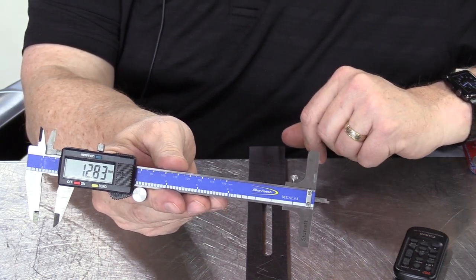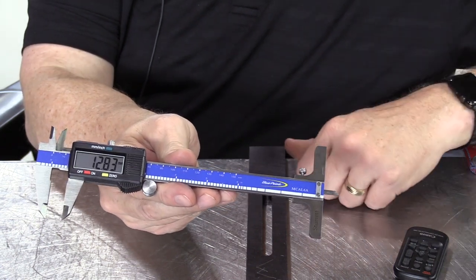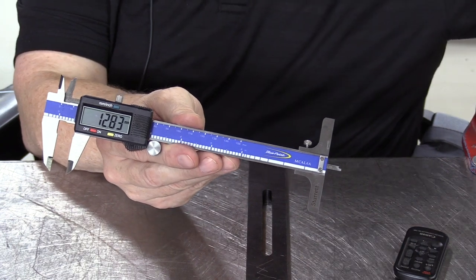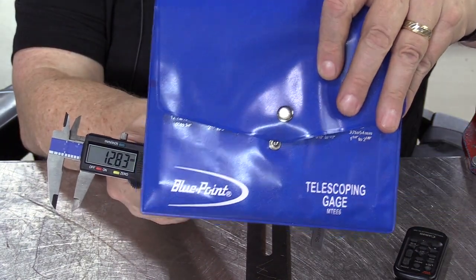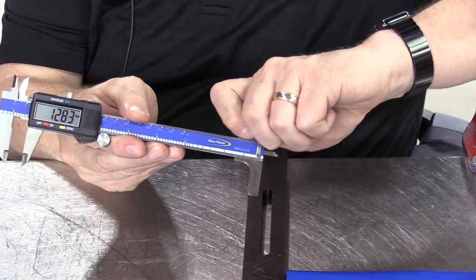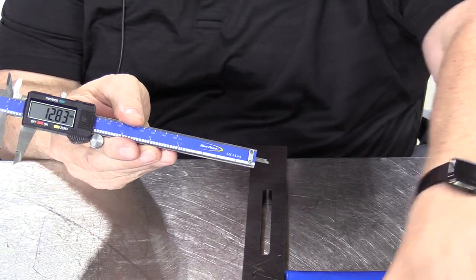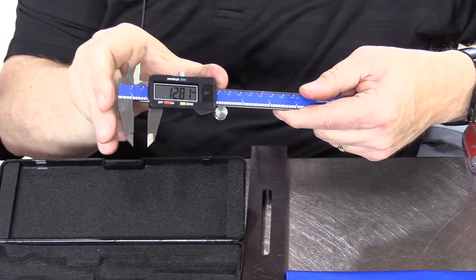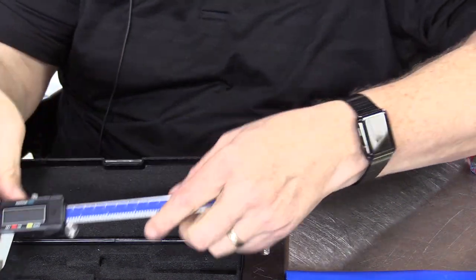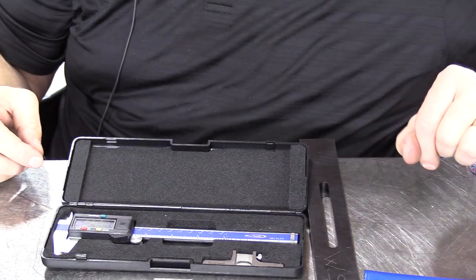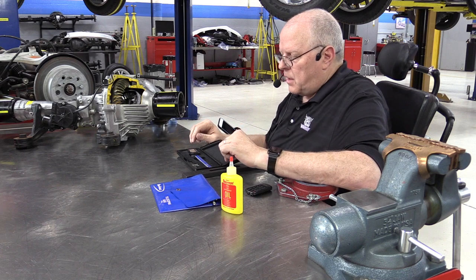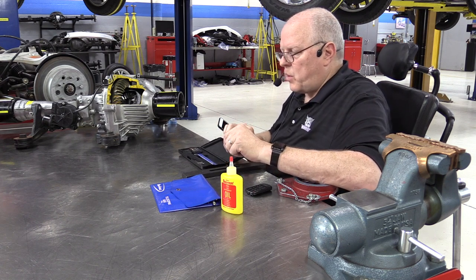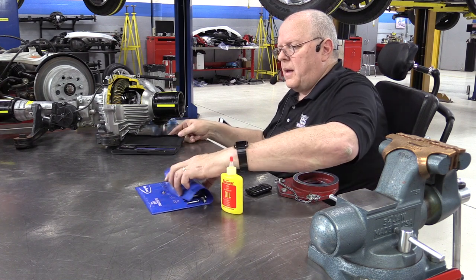Now one other thing I wanted to show you how to use with this digital caliper is a set of telescoping gauges. Let me take this depth adapter off. By the way, whenever in my class you are not using the digital caliper, unlock the lock here, turn it off, and set it back in its case so that it won't get damaged. Don't lay any parts on top of this, don't lay it in oil. If it gets dirty, wipe it off quickly. If it gets damaged, let me know.